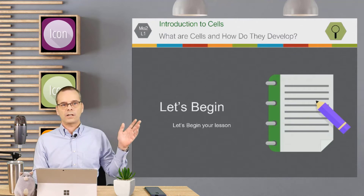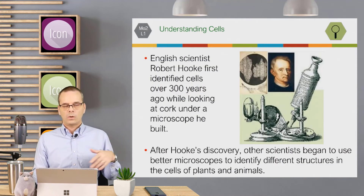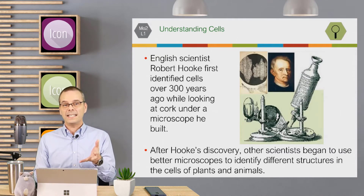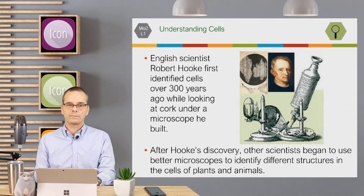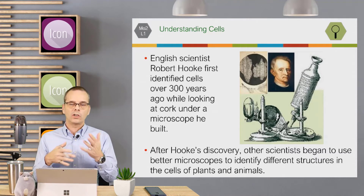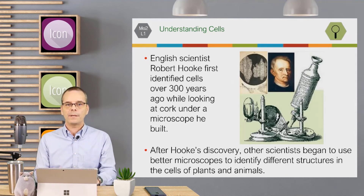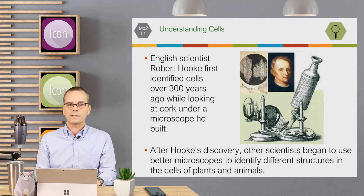So let's go ahead and begin our lesson. There's a gentleman named Robert Hooke. Over 300 years ago, he was the one who identified cells. He did this by looking at a piece of cork under a microscope that he actually built. Once he did this, other scientists started looking at other things underneath microscopes that they made, and everybody became interested once he identified the concept of cells.